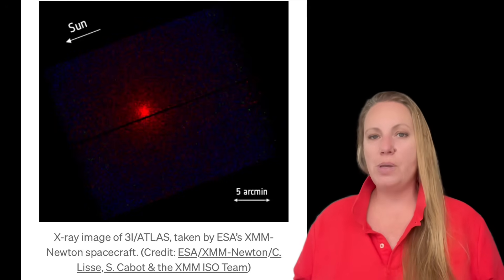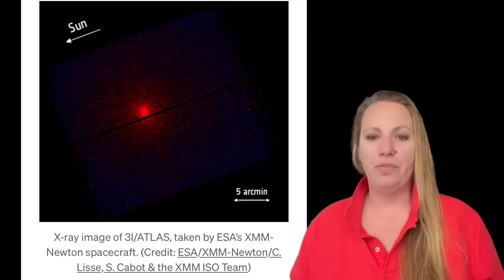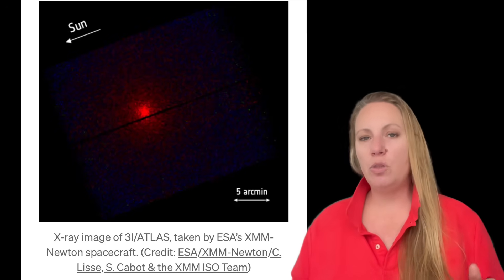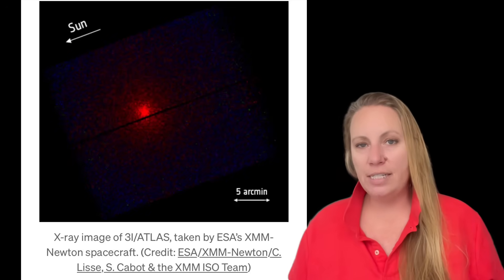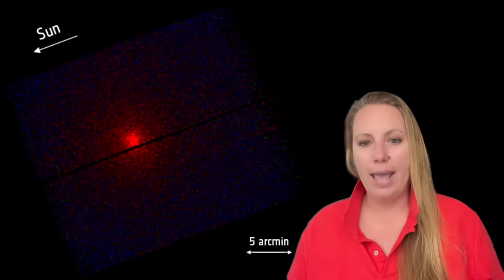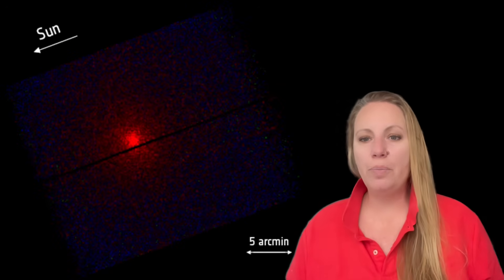XMM-Newton is an X-ray telescope, so it doesn't see visible light - it sees high-energy radiation. It observed 3i Atlas for 20 hours straight. At that time, 3i Atlas was roughly 284 million kilometers away, about 176 million miles. The instrument used is called EPIC - European Photon Imaging Camera.